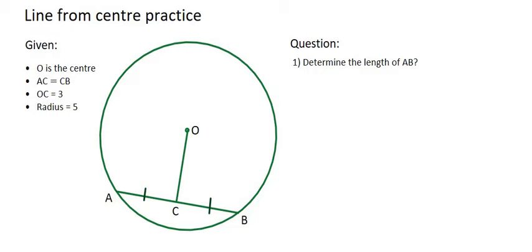In this question, we are given that O is the center of the circle, AC is equal to CB, OC's length is 3, and the radius of the circle is 5.